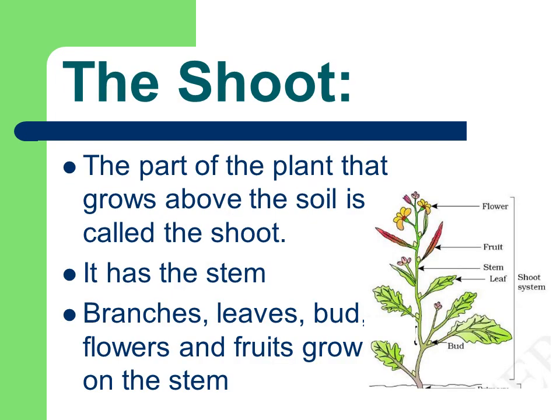Now let's study the shoot. The part of the plant that grows above the soil is called the shoot. It has the stem, and branches, leaves, bud, flowers and fruits grow on the stem. Can you see a stem in the diagram? There are leaves, fruits, flowers and bud on the stem. So the whole part is known as the shoot or shoot system.